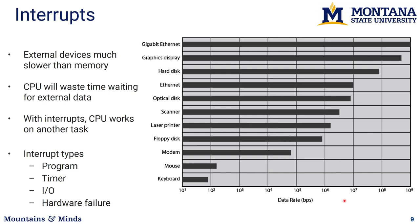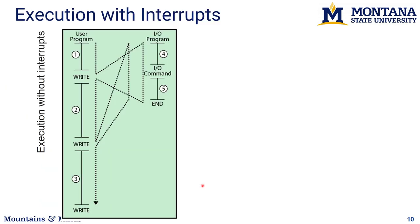Interrupts are the part where the program takes a pause to do something else. There are different reasons: a divide by zero that needs to be handled outside the program, a timer that expires and reinvokes the program, I/O operations, or hardware failure. Different external devices take different amounts of time — Ethernet is fast, so those interrupts are frequent, whereas keyboard interrupts are few and far between.